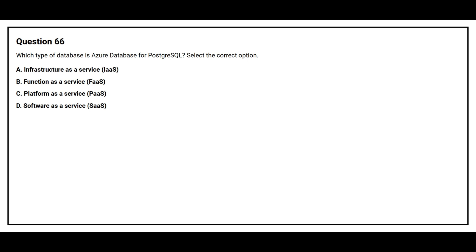Question 66: Which type of database is Azure Database for PostgreSQL? Option A, infrastructure as a service. Option B, function as a service. Option C, platform as a service. Option D, software as a service. The correct answer is Option C, platform as a service.